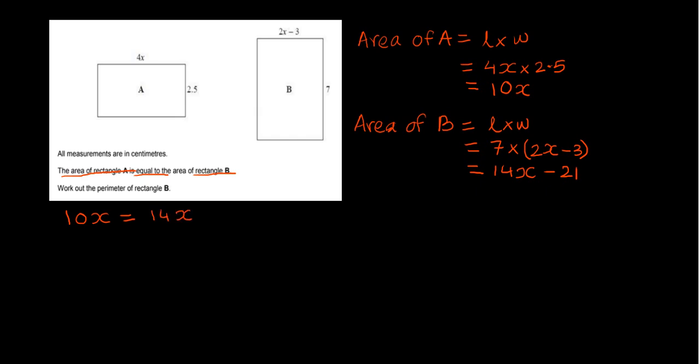So we found the area of rectangle A, we found the area of rectangle B. The next step is to make them equal to each other. So let me do it at the bottom here: 10x equals 14x minus 21.